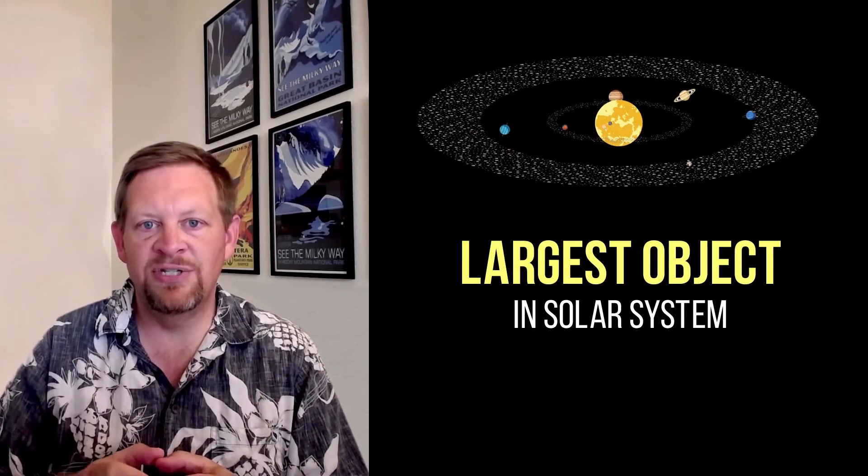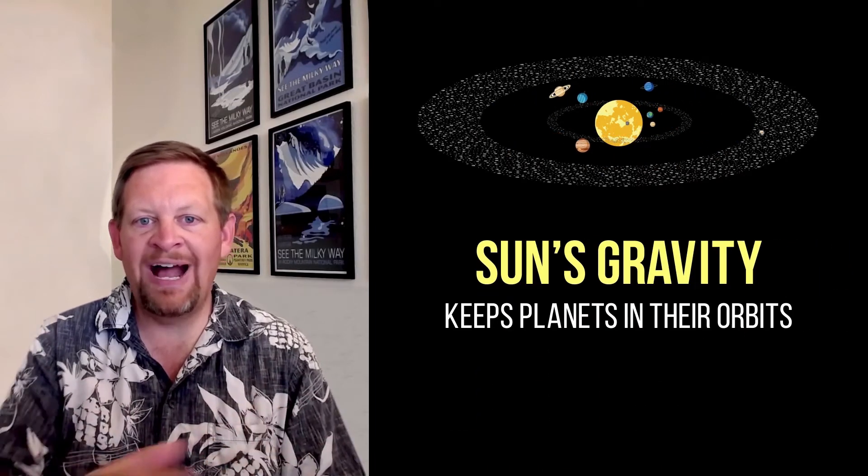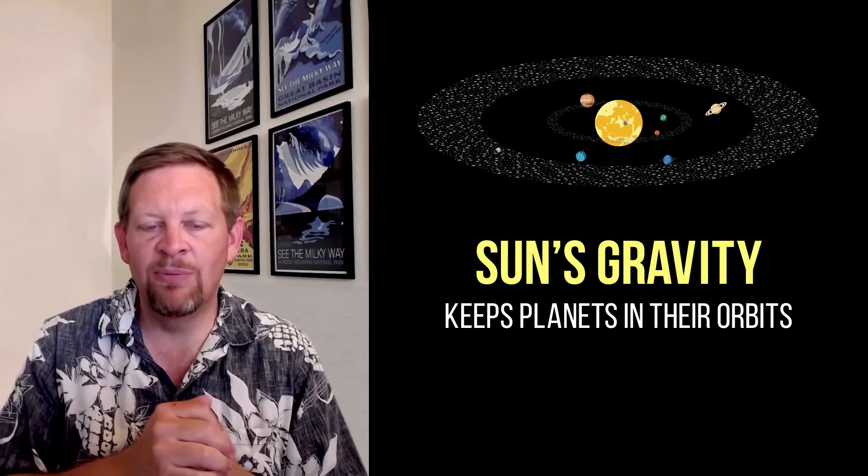The Sun is at the center of our solar system, and all the planets orbit around it. That's because it is the largest thing in the solar system. Most of the mass of the solar system is in the Sun, so its gravity keeps the planets in their orbits.